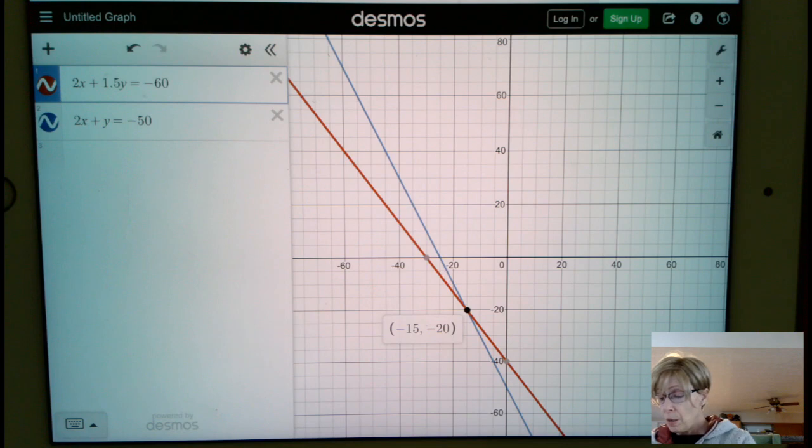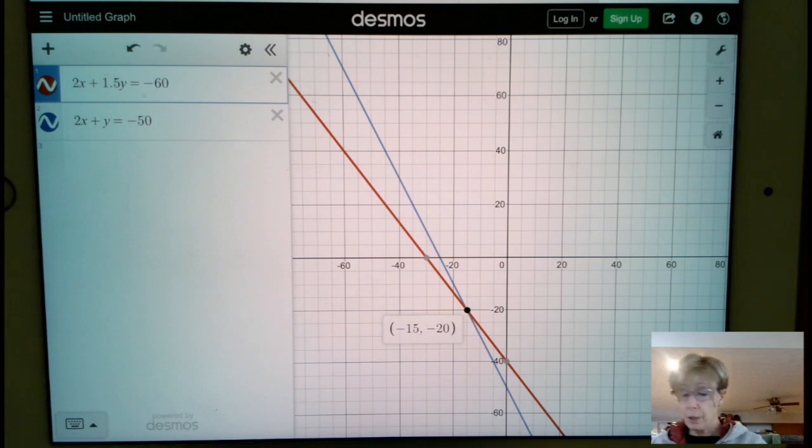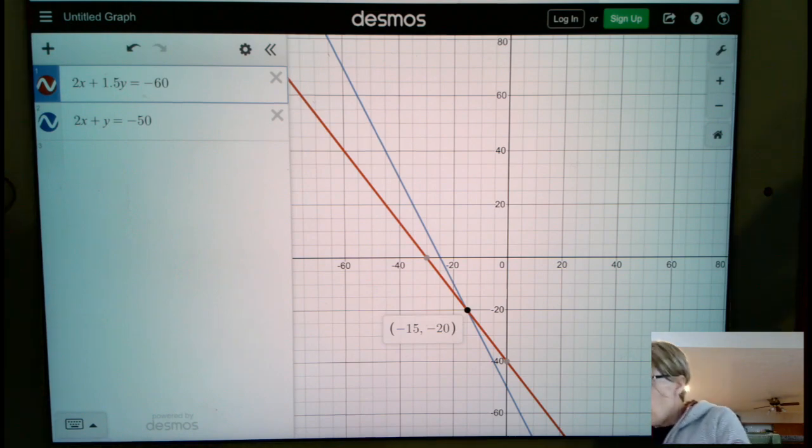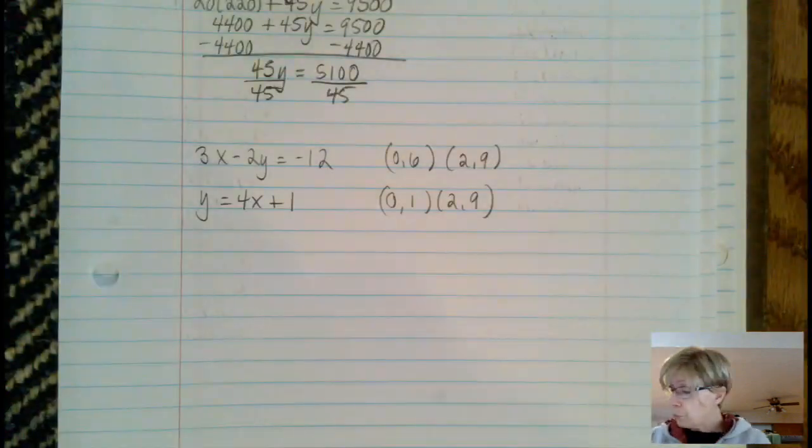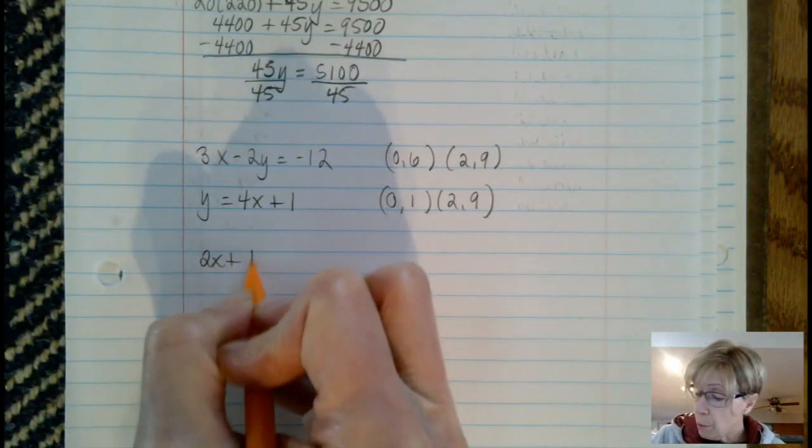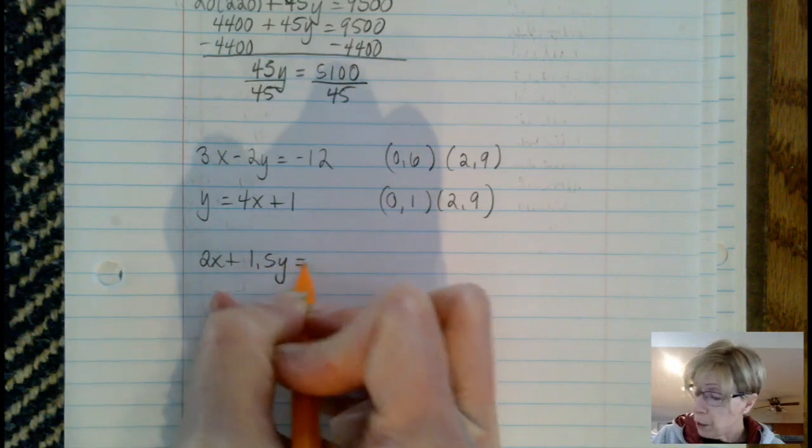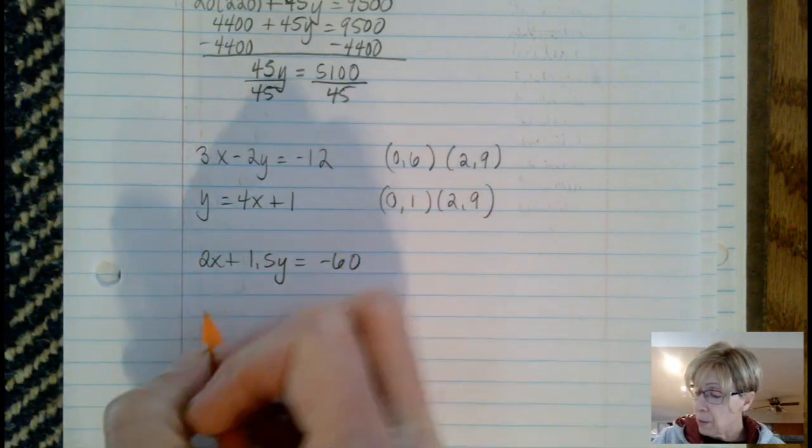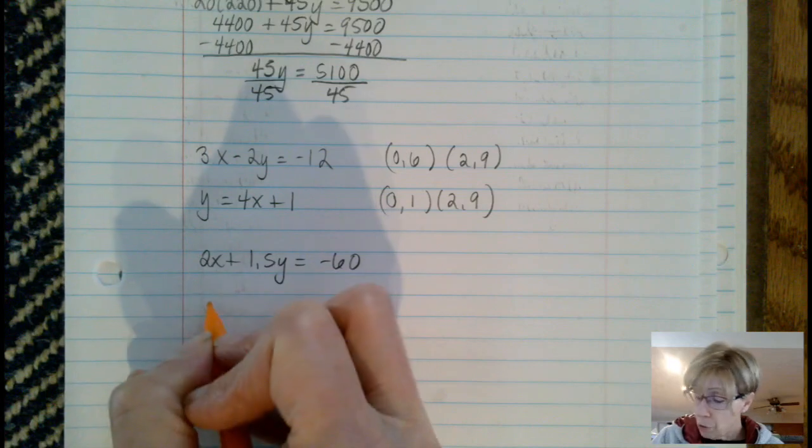As we go back and look at this particular problem, when you're drawing it in, and like I said I've got it drawn here but I doubt that I can get it in on the iPad. Let's write down the equations here, which were the 2x plus the 1.5y equals negative 60 and the 2x plus y equals negative 50.